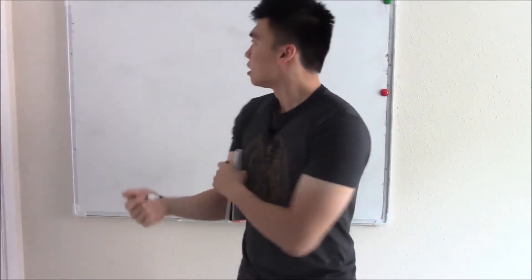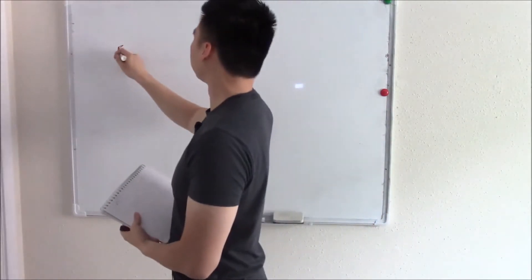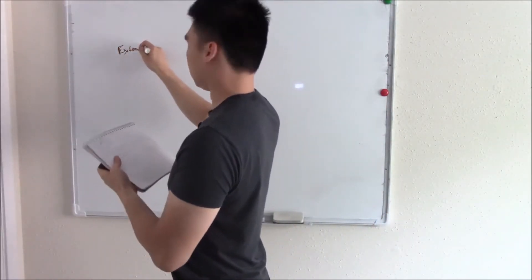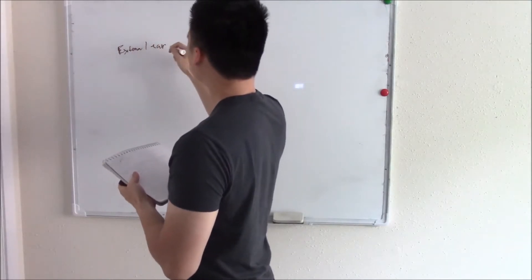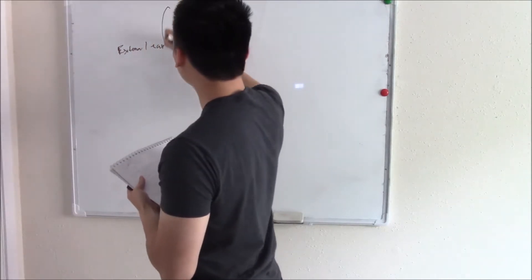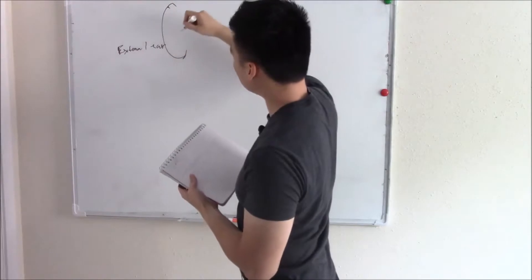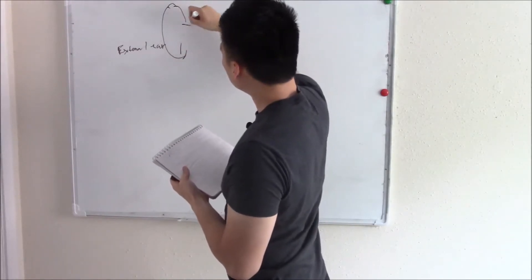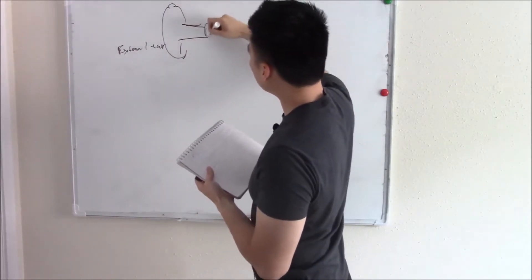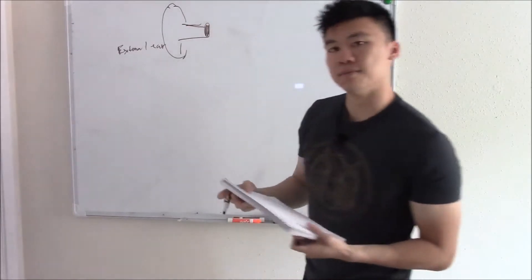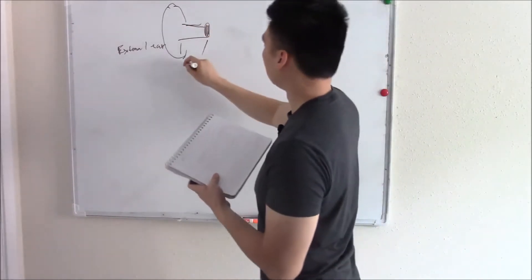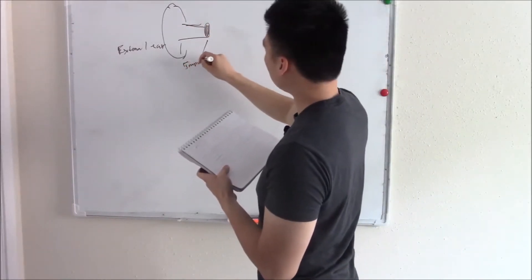So it'd be your ear canal and your tympanic membrane. That's everything you can see externally. So that's your external ear. And I'll draw it out like this. This is your ear and your ear lobe, your ear canal and your tympanic membrane.